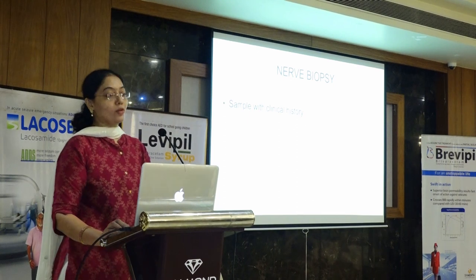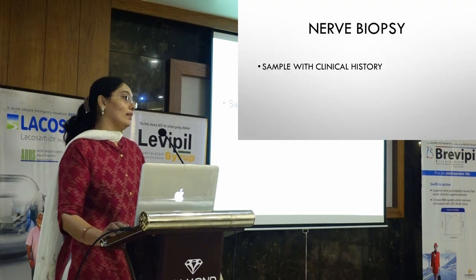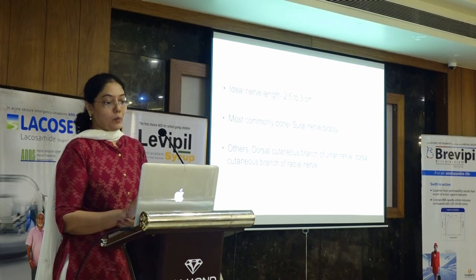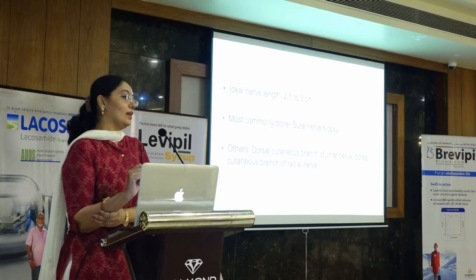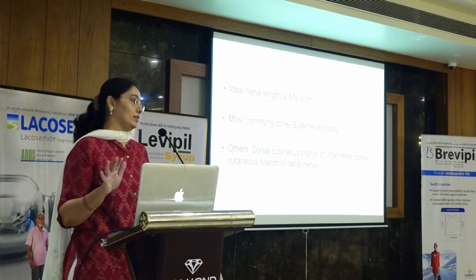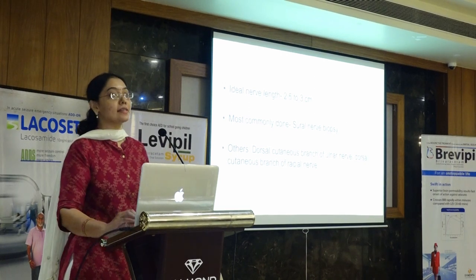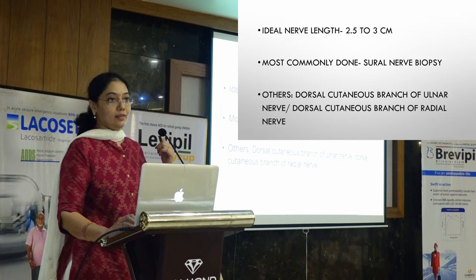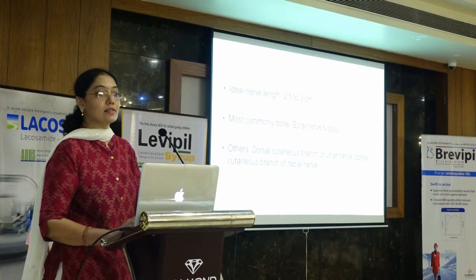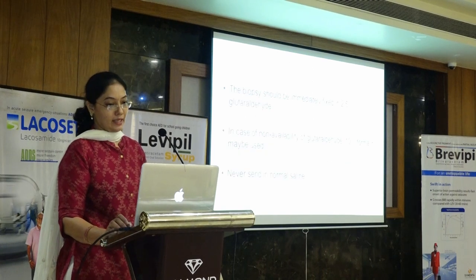Now talking about how the nerve has to reach us. Again, we want samples with complete clinical history. The ideal length of nerve required is at least 2.5 to 3 cm. If you give us only 0.5 cm, we can see just one transverse section — no more cross sections, no longitudinal sections. The most commonly done is the sural nerve biopsy; for upper limb involvement, the dorsal cutaneous branch of the ulnar nerve or radial nerve can be taken. This has to be fixed immediately in 2.5% glutaraldehyde.